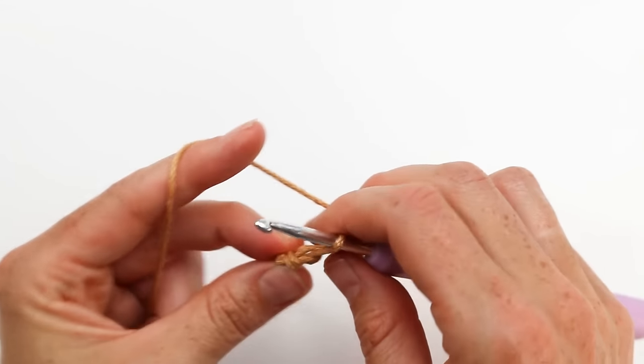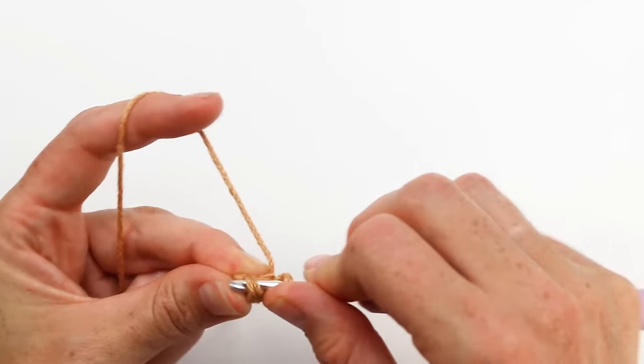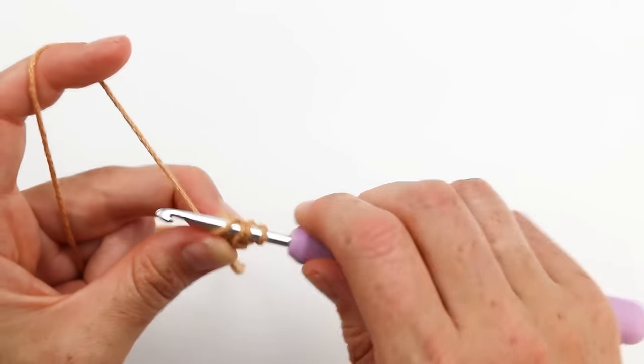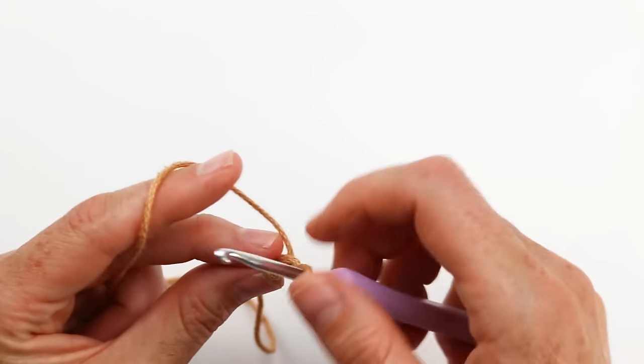We're always rotating clockwise if you're right-handed and counterclockwise if you're left-handed, and we're just always working directly under that back two bars at the end of the V. So now you can just continue like this until you have the length of cord that you need for whatever you're making.